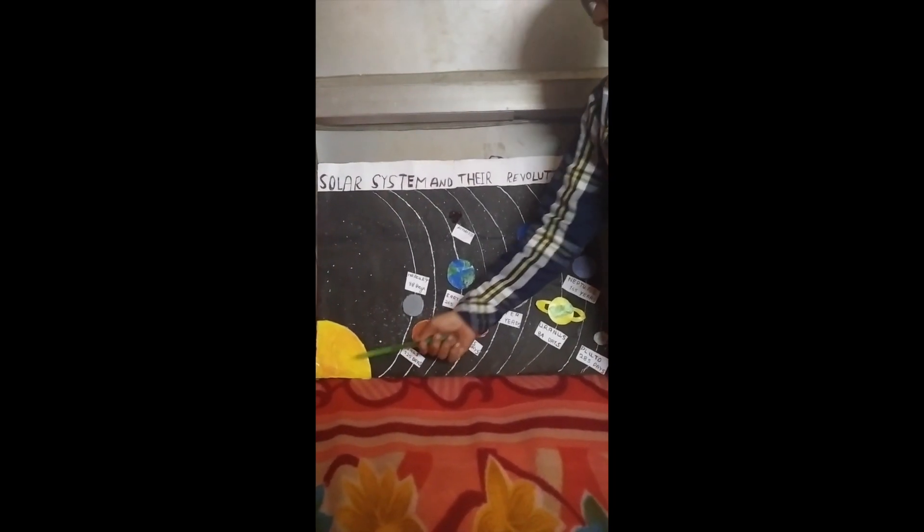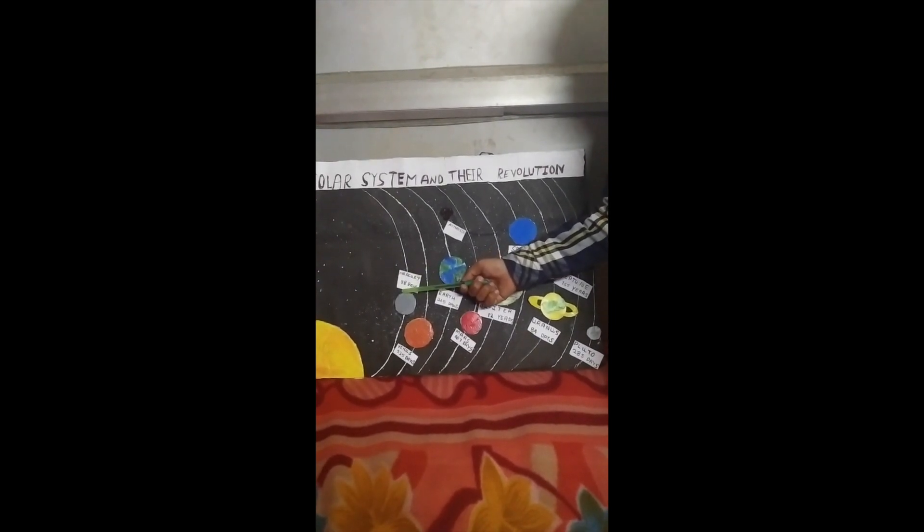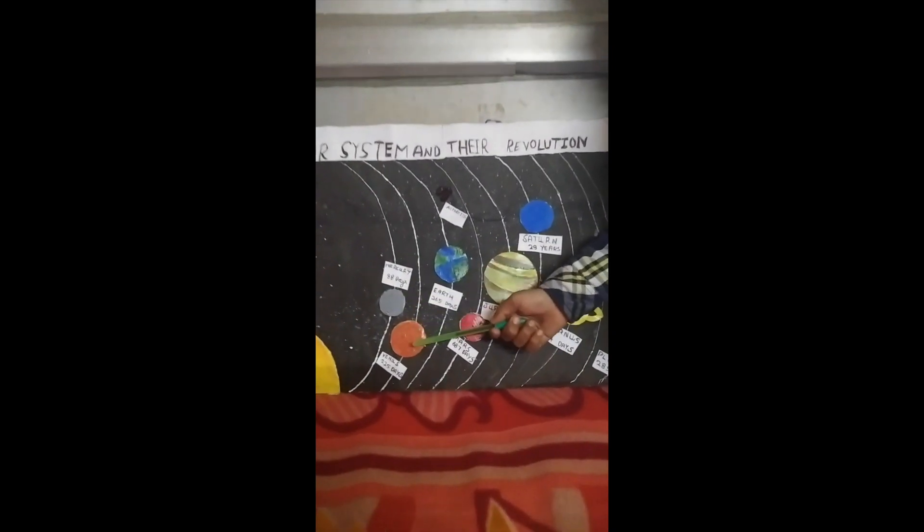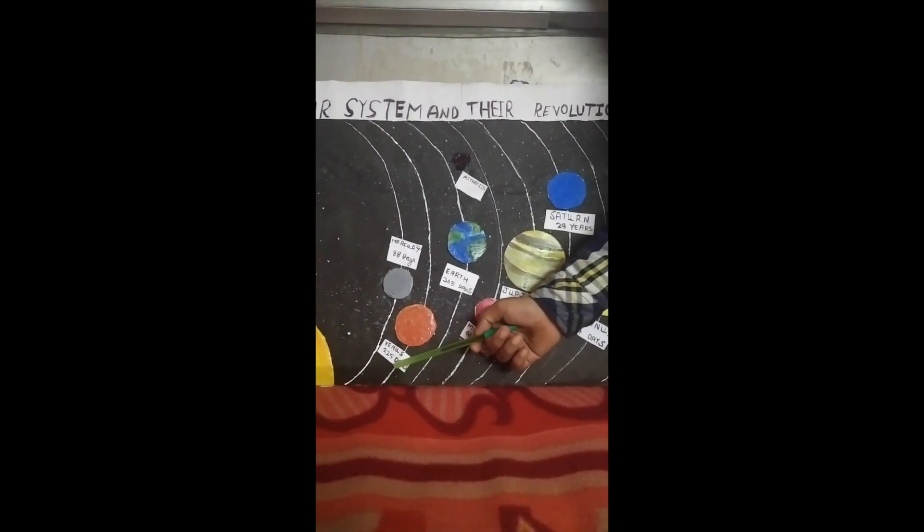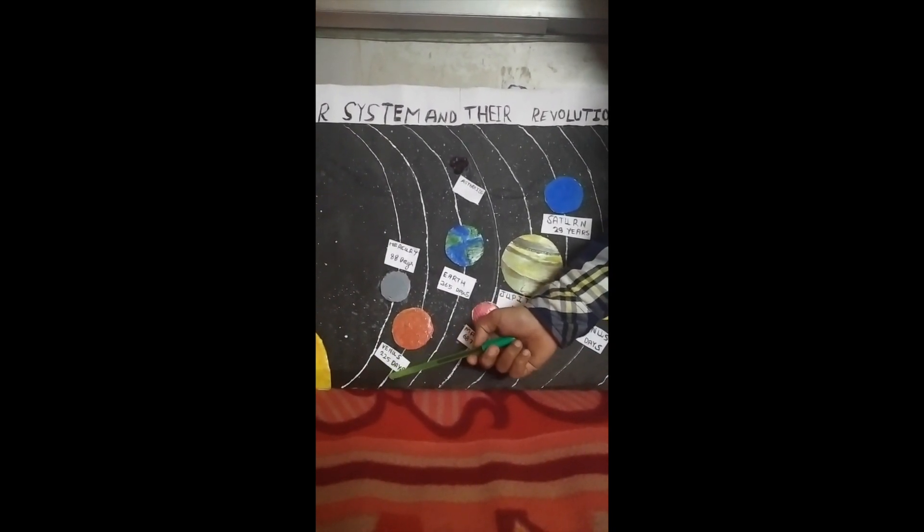See this is sun. The first planet is Mercury. The revolution period is 88 days. The second planet is Venus. The revolution period is 225 days.